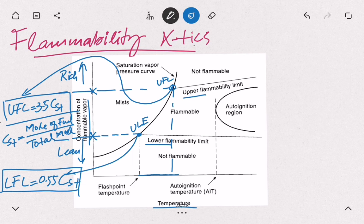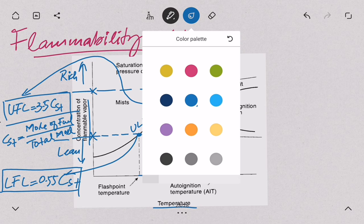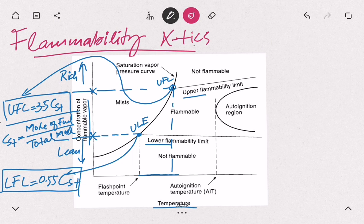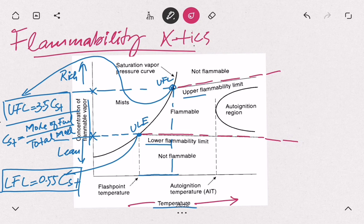Now, looking at the trend — the dependency of flammability limits on temperature — if we increase the temperature, the lower flammability limit decreases and the upper flammability limit increases. So basically the whole flammability range becomes wider and wider.